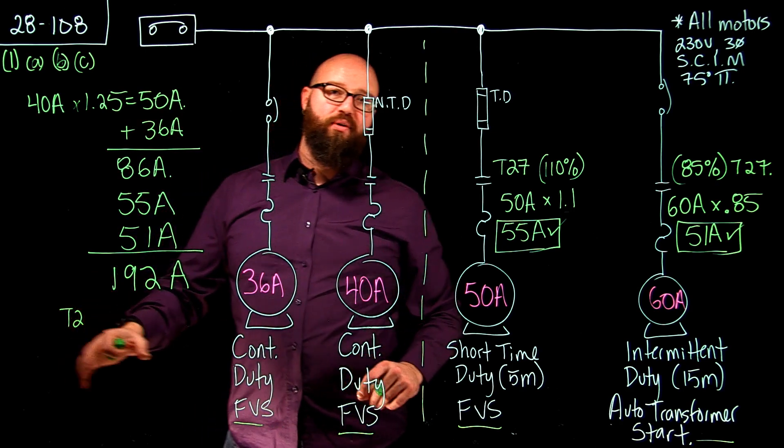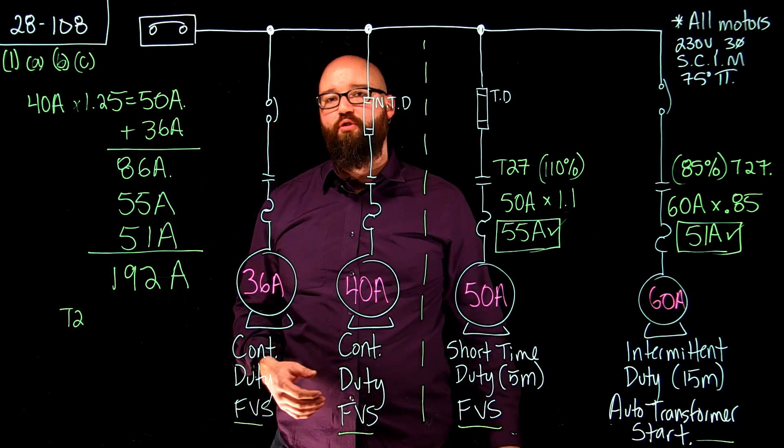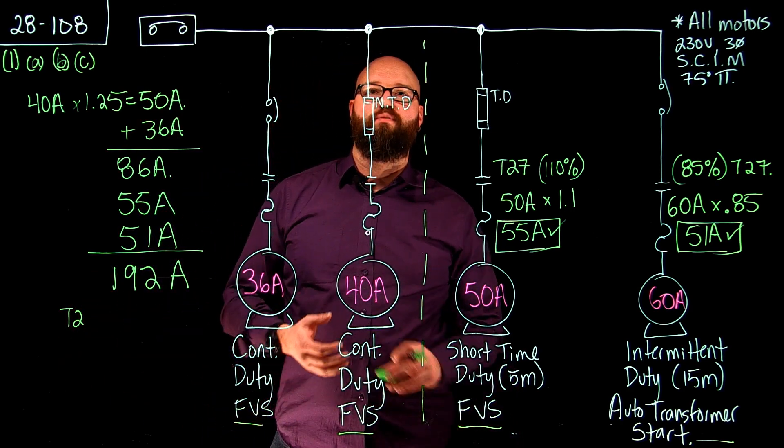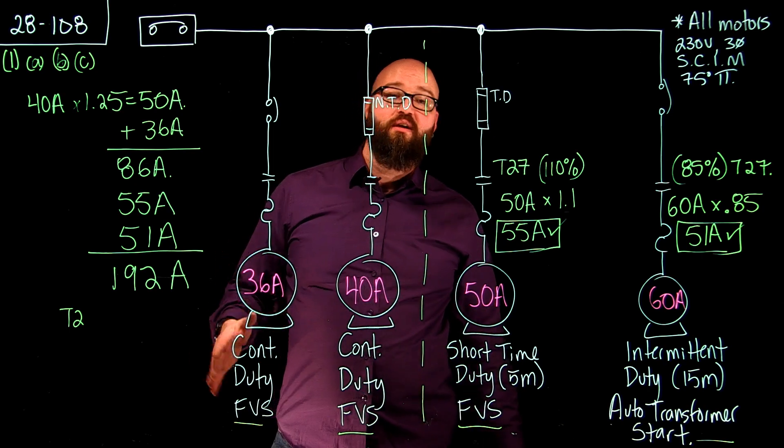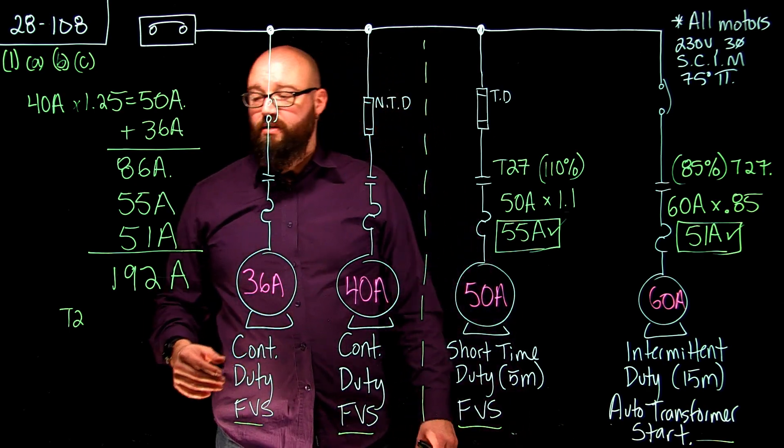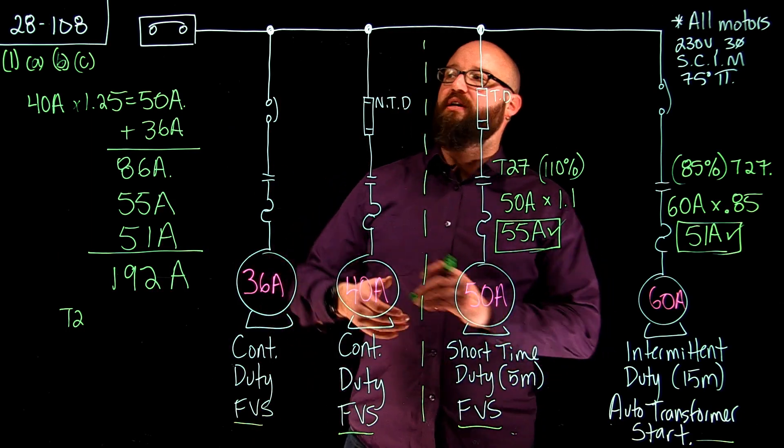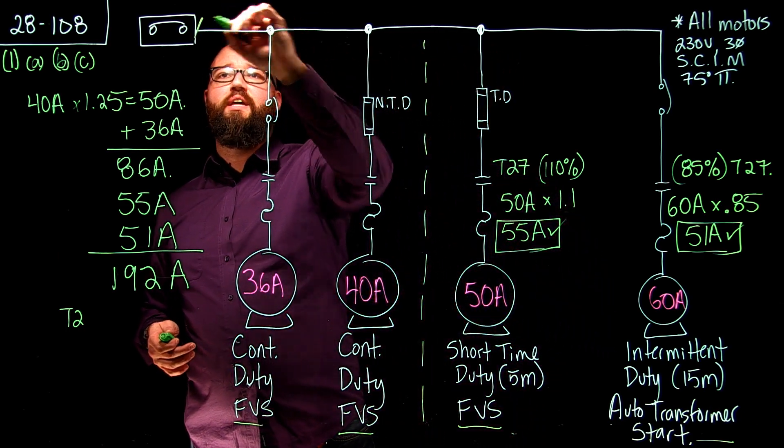Here I don't have to worry. Previously in another video I mentioned 28.104 telling us that we have to select off the 75 degree column because we are using motors except for the class A motor. We don't have to worry about that anymore because if we look, this conductor right here,